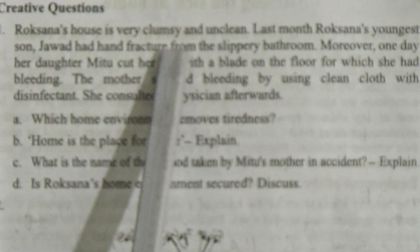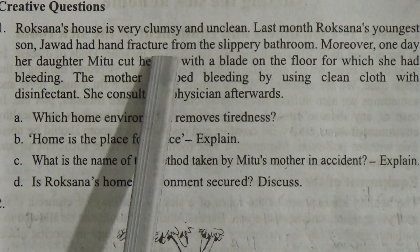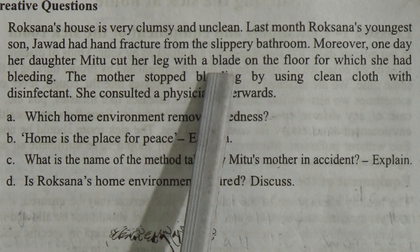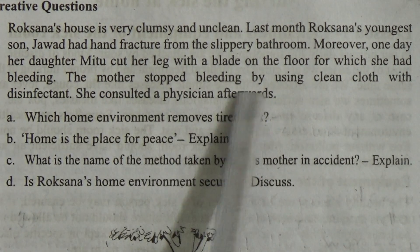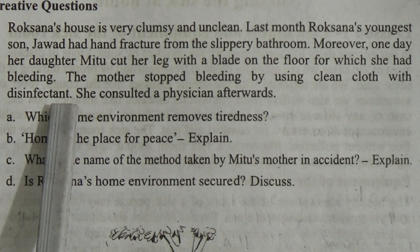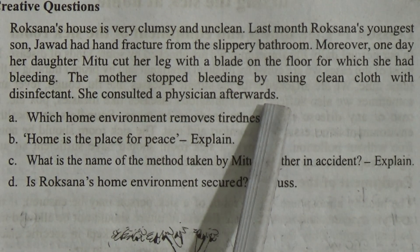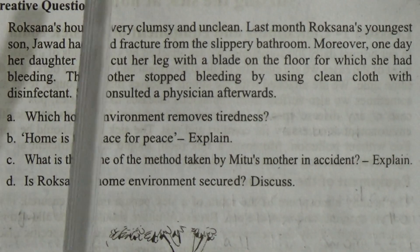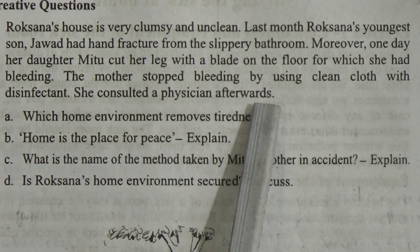Creative question one: Roxana's house is very clumsy and unclean. Last month Roxana's youngest son Java had a fracture from the slippery bathroom. Moreover, one day her daughter Methu cut her leg with a blade on the floor, causing bleeding. The mother stopped the bleeding using a clean cloth with disinfectant and consulted a physician afterwards. Roxana's house is always messy and accidents frequently occur there.